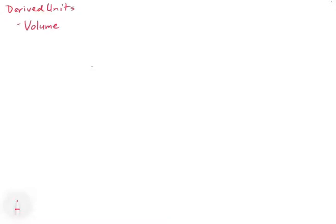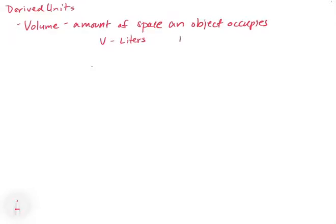In this video, we're going to look at what we call a derived unit. A derived unit is any unit in the SI system that is based on another unit. For example, volume. Volume is basically the amount of space an object occupies, and the unit for volume is liters. One liter is equal to one decimeter cubed — that's what we mean by a derived unit.